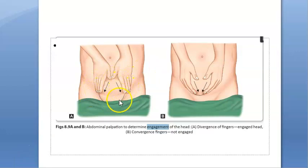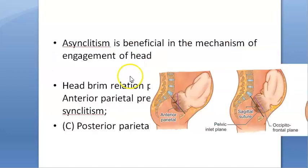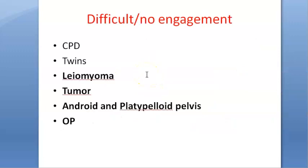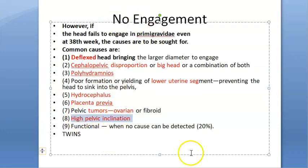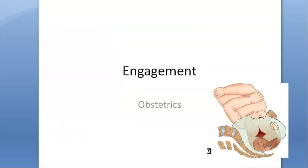To confirm engagement: diverging hands mean engaged; converging hands mean not yet engaged. Asynclitism helps engagement. Causes of no engagement include: deflexed head, cephalopelvic disproportion, large fetal head, polyhydramnios, poor formation of the lower uterine segment, hydrocephalus, placenta previa, pelvic tumors, high pelvic inclination, functional causes, and twins. That covers the topic of engagement in obstetrics.